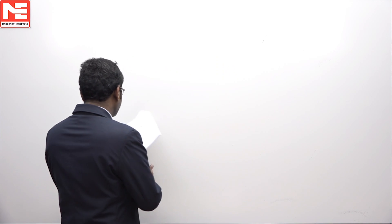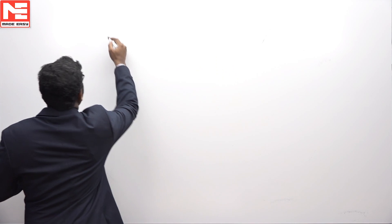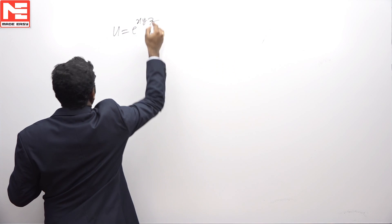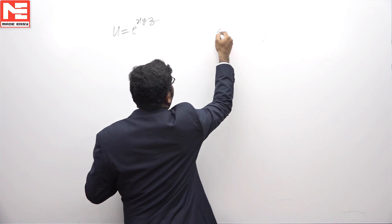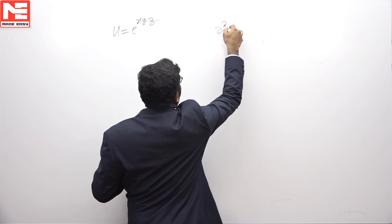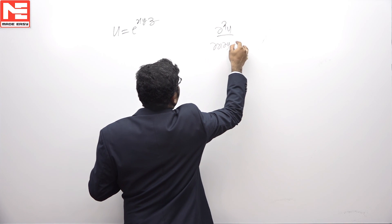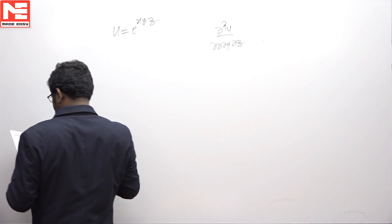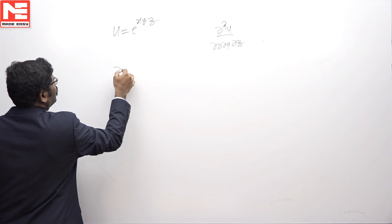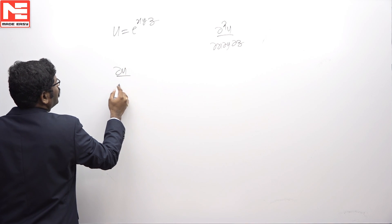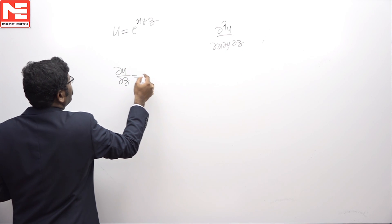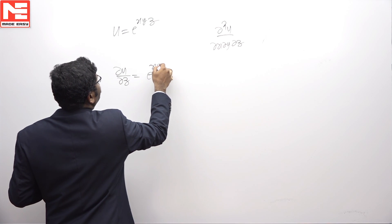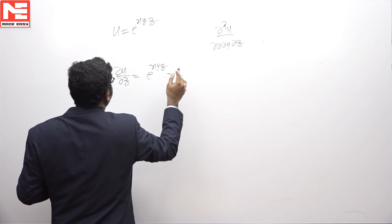In this problem, u is equal to e power xyz. We have to find del cube u by del x del y del z. Now, del u by del z is e power xyz into xy.